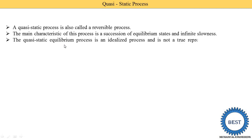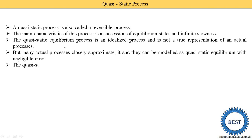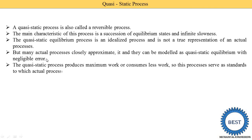A quasi-static equilibrium process is an idealized process and is not a true representation of actual processes. Any actual system does not strictly follow a quasi-static process, and if some system does follow it, there will be certain errors. But many actual processes closely approximate it and can be modeled as a quasi-static process with negligible error. The quasi-static process produces the maximum work or consumes the least work, so we achieve maximum efficiency in this process. This process serves as a standard to which actual processes can be compared.